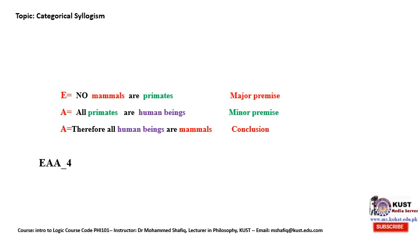Now let me give you some examples. The mood of universal negative propositions is E, while the mood of universal affirmative propositions is A. In this categorical syllogism, the first premise says 'No mammals are finite' — a universal negative proposition (E). The second premise says 'All human beings are mammals' — a universal affirmative proposition (A). And the conclusion is also a universal affirmative (A). So the form of this categorical syllogism would be EAA-4.